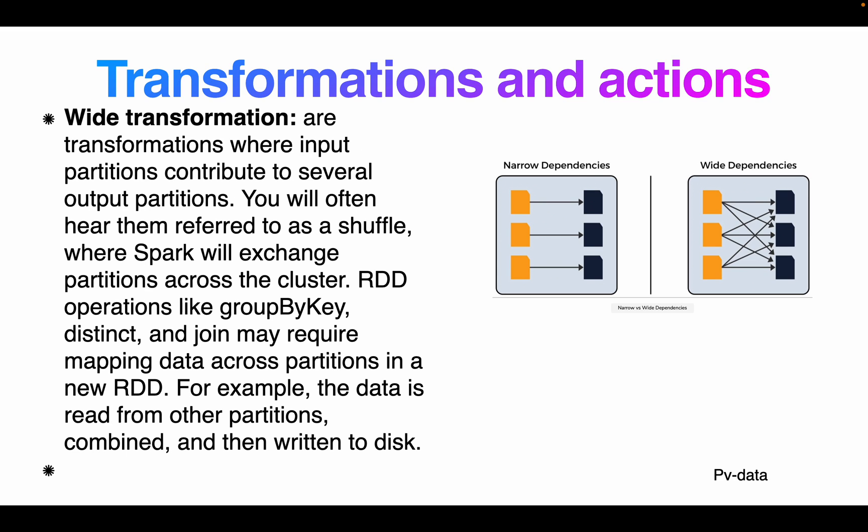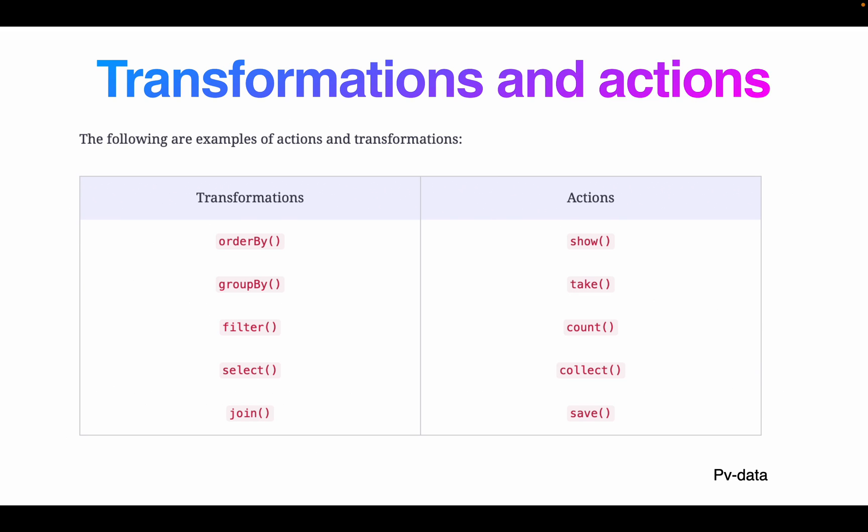In a wide transformation, data is shuffled — input partitions contribute to several output partitions. This is why you will often hear them referred to as shuffle operations. Spark exchanges partitions across the cluster. Operations like groupByKey, distinct, and join may require mapping data across partitions into a new RDD. For example, data is read from other partitions, combined, and written out — this is a wide transformation.